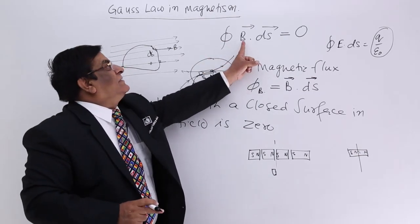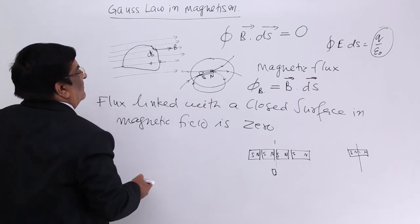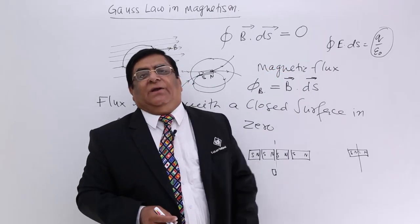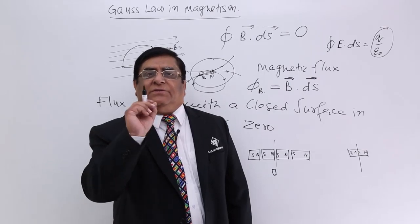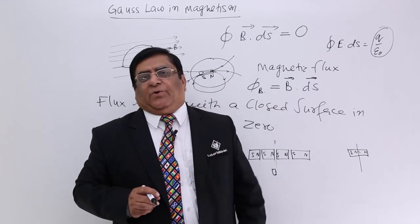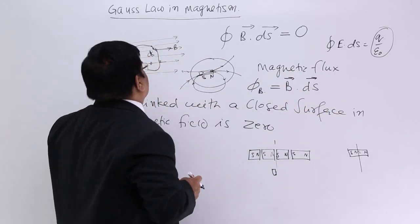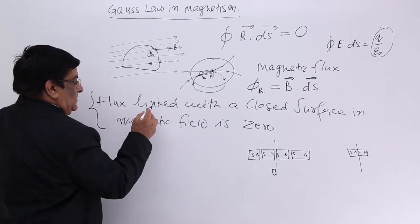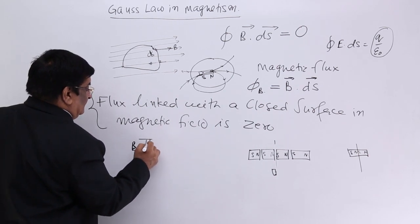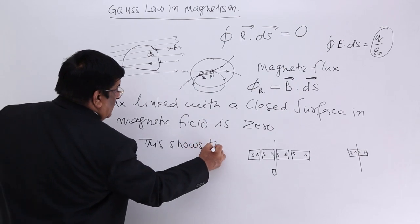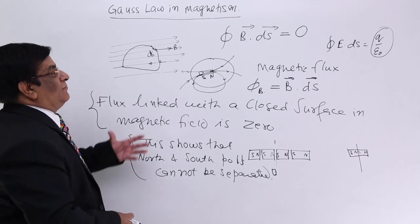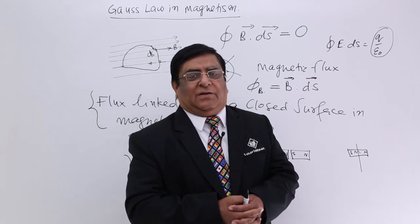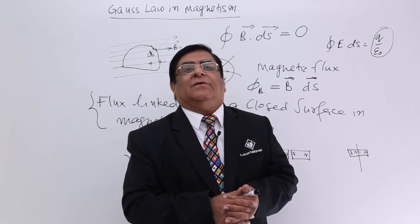That is why the closed integral of B·ds is equal to 0. Please remember this — it is a very important result. This was selected as one of Maxwell's equations because it tells us about the nature of magnetic field: that magnetic field lines are only continuous lines, they do not have a starting point and they do not have a terminal point. This is Gauss's theorem in magnetism. Even wherever we find north and south poles, they cannot be separated. After this, we will study certain more properties related to magnetism and the terms used in magnetic calculations and magnetic characteristics. Thank you.